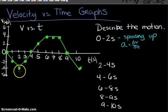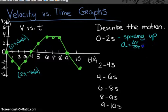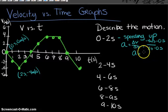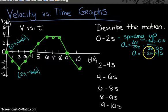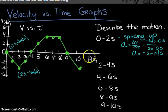Using two points on the line — zero seconds at zero meters per second and two seconds at negative four meters per second — we calculate: acceleration = (−4 − 0) / (2 − 0) = negative two meters per second squared. So the object changes velocity by negative two meters per second every second: starting at zero, it reaches negative two at one second and negative four at two seconds.